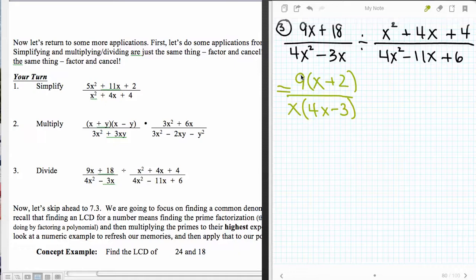I just copy this down, and that's factored to that, and that one's factored to that. And then I'm going to go ahead and rewrite the denominator into the numerator, so 4x² - 11x + 6, and then down here x² + 4x + 4, and those factored that way.